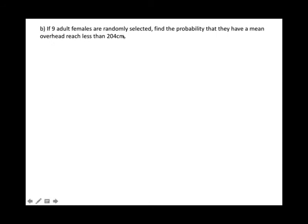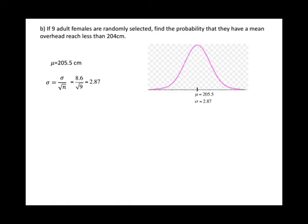Part B: if 9 adult females are randomly selected, find the probability that they have a mean overhead reach less than 204 centimeters. The sample size is n = 9. We use the Central Limit Theorem — the mean doesn't change, and we find the standard deviation by plugging into the formula, getting 2.87. Sketching the graph, we want the area less than 204, which is the area to the left.